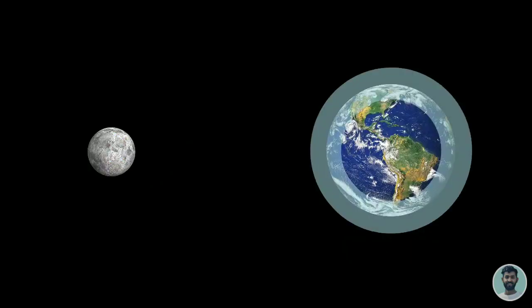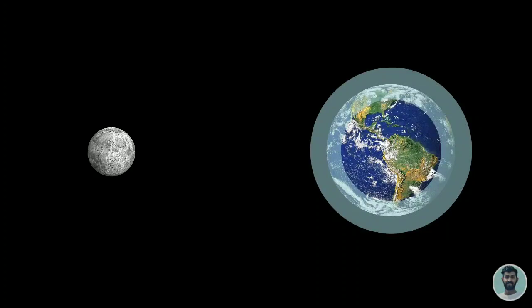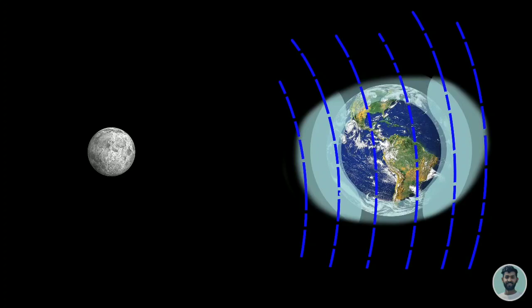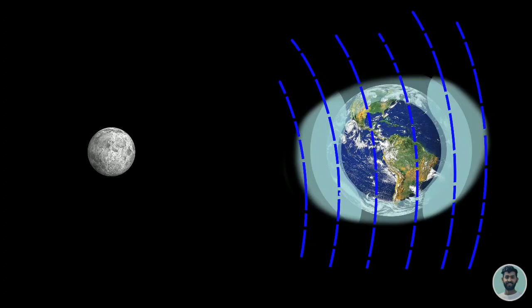In the relativistic description of the moon's tides, the tidal forces are produced by the blue tendex lines that squeeze the earth's lateral side and red tendex lines that stretch towards and away from the moon. This is just like black hole's tendex lines as we discussed before.